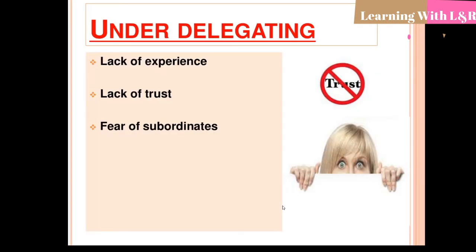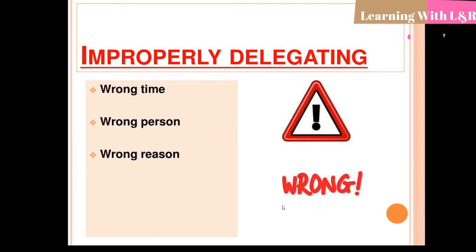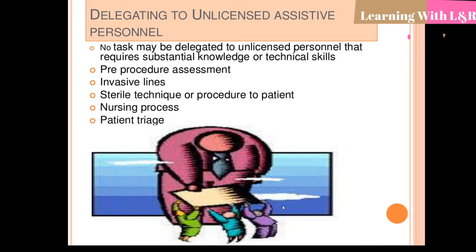Causes of under-delegating include lack of experience, lack of trust, and fear regarding subordinates. Causes of over-delegation include poor time management and assigning tasks beyond the capability of the staff. Improperly delegating occurs when the person delegates work at the wrong time, to the wrong person, or for the wrong reason.